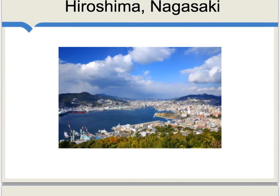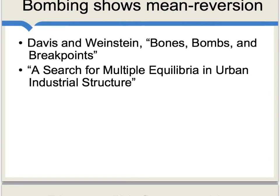If we look at cities which have been bombed, it seems that over time they revert back to where they would have been had the bombing not occurred, at least in terms of overall economic activity. In Japan, both Hiroshima and Nagasaki are fairly successful, fairly productive cities today. It seems they had good factor endowments and managed to keep that advantage and rebuild. This urban bombing evidence shows a lot of mean reversion and thus supports factor endowment theories to some extent.